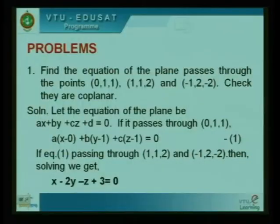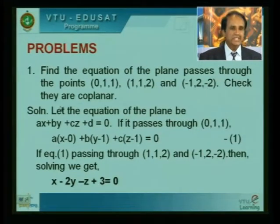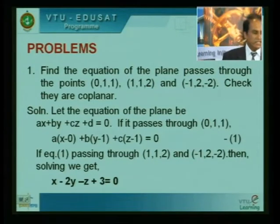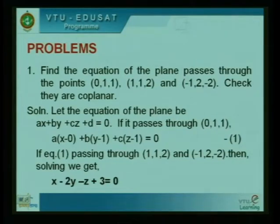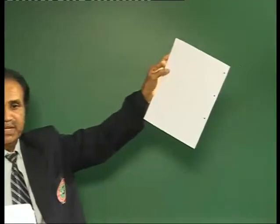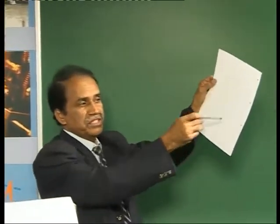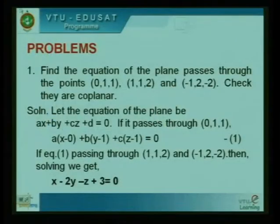The first problem is: find the equation of the plane passing through the points (0,1,1), (1,1,2), and (−1,2,−2), and check they are coplanar. When points lie on the same plane, we have a coplanar situation. Here the three points are P=(0,1,1), Q=(1,1,2), and R=(−1,2,−2), all lying on the same plane.